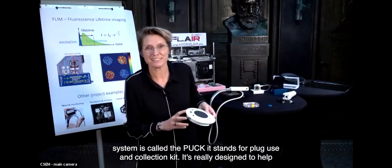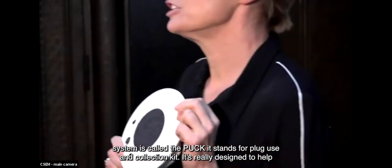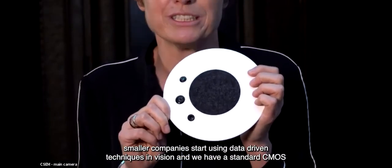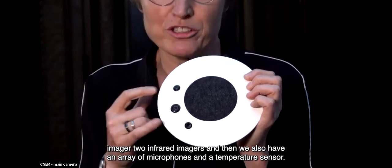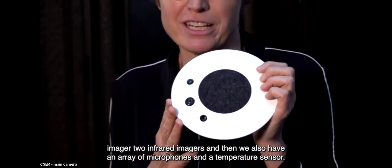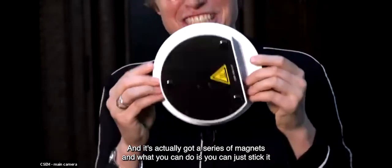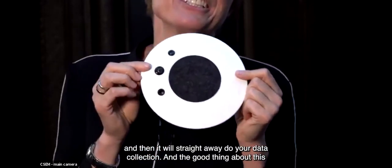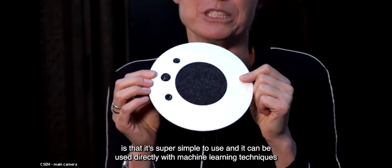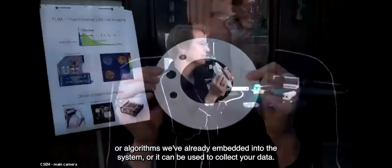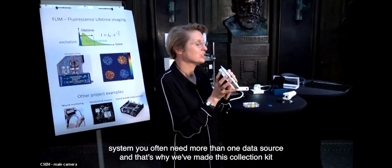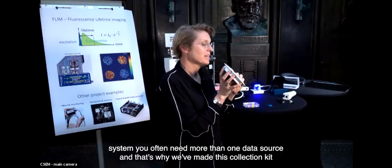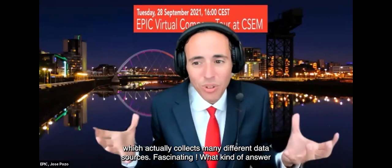I want to talk about two final systems. This system is called the PUCK - it stands for Plug Use and Collection Kit. It's really designed to help smaller companies start using data-driven techniques and vision. We have a standard CMOS imager, two infrared imagers, an array of microphones, a temperature sensor, and it's got a series of magnets so you can just stick it and it will straight away do your data collection. The good thing about this is that it's super simple to use and can be used directly with machine learning techniques or algorithms we've already embedded into the system, or it can be used to collect your data. One of the things we've realized in working with companies is that you need a robust system and you often need more than one data source, which is why we've made this collection kit that collects many different data sources.